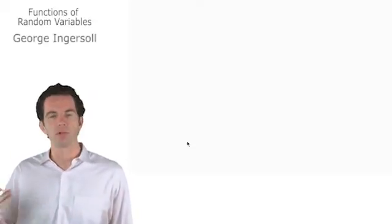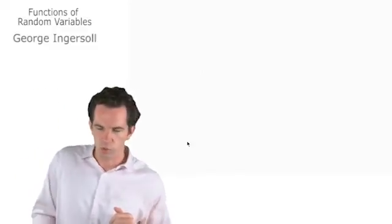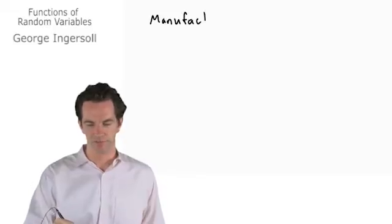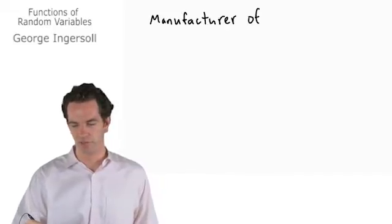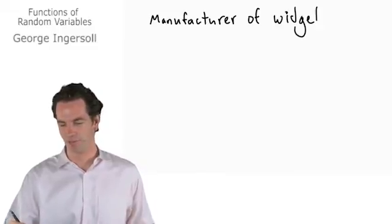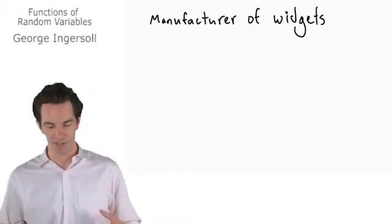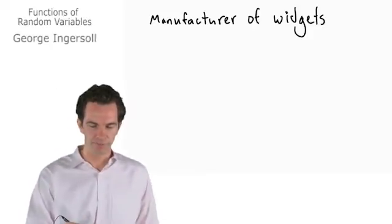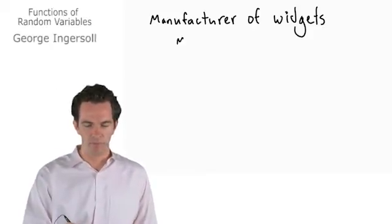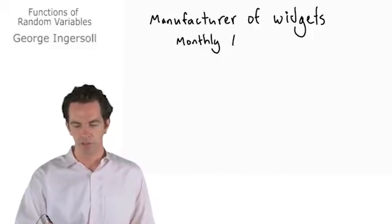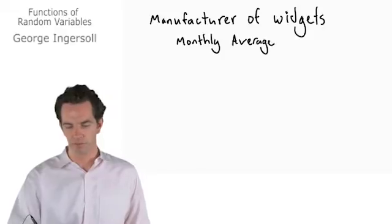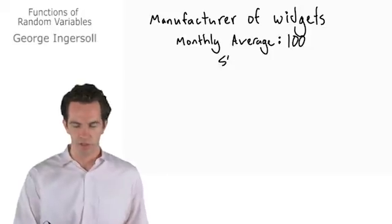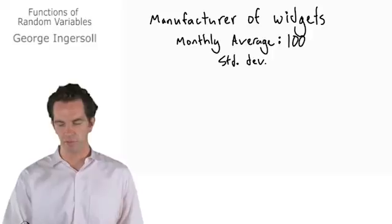Let's put an example in here. We use a random variable in a function. Let's say we are a manufacturer of widgets. If you've never seen this term before, it's something that business people often use to describe a generic product. So widgets is a stand-in for something that can be manufactured. Every month we manufacture, on average, a hundred widgets, and we have a standard deviation on our monthly manufacturing of 20.